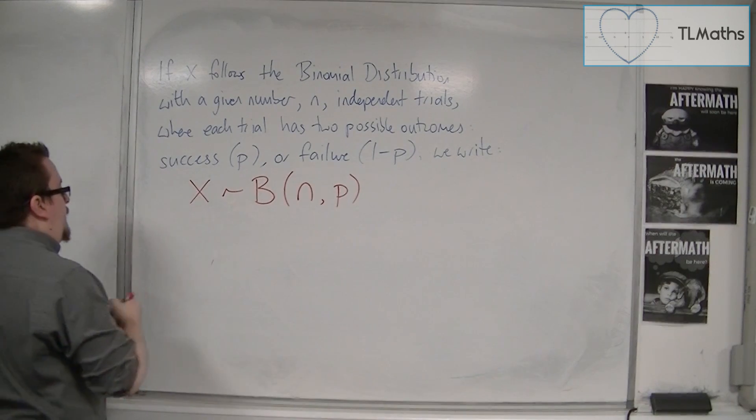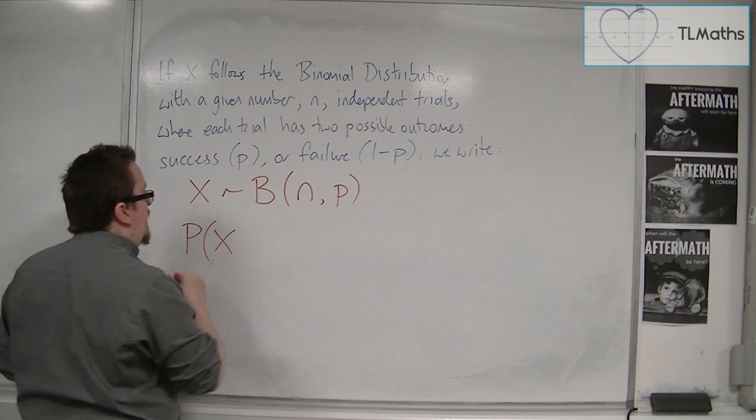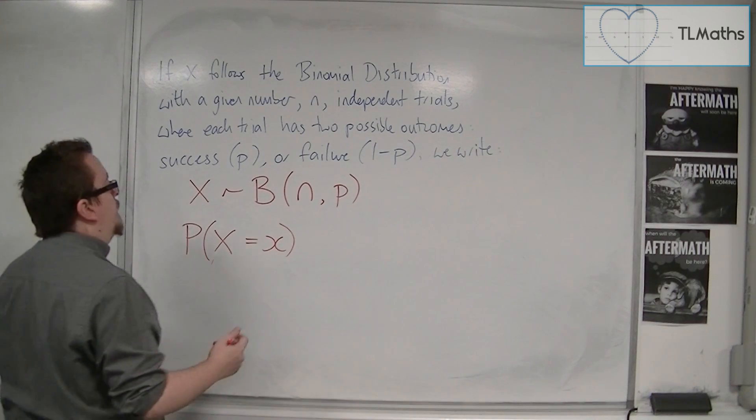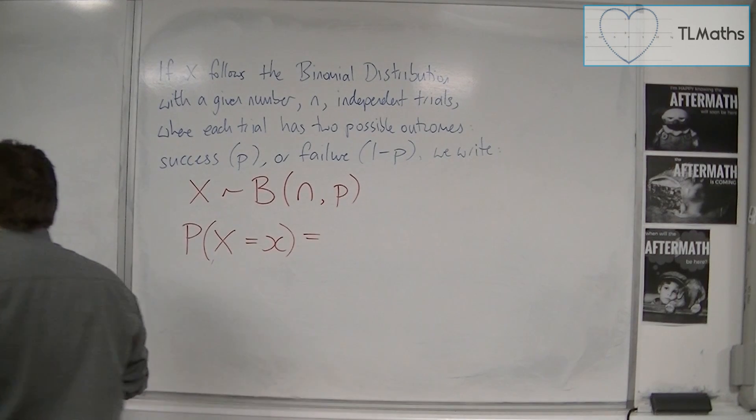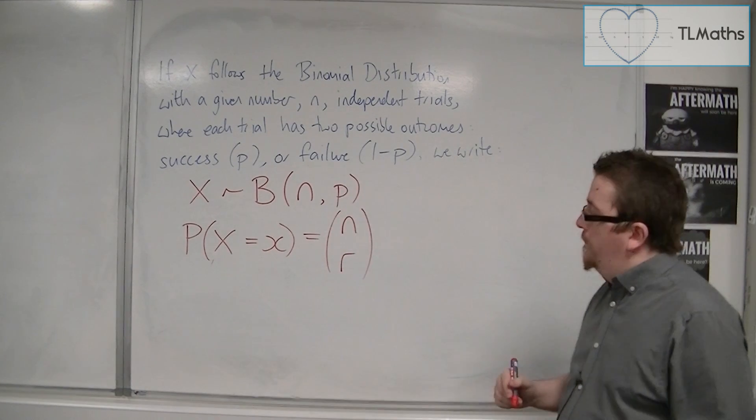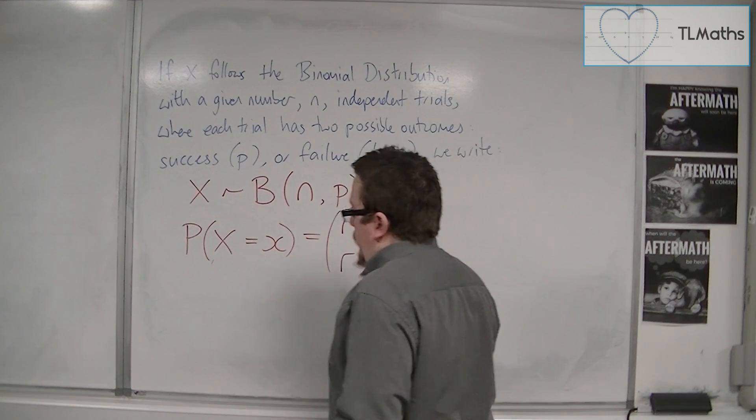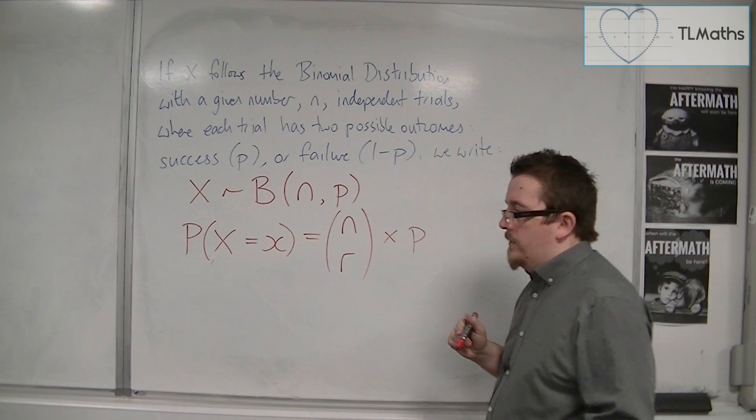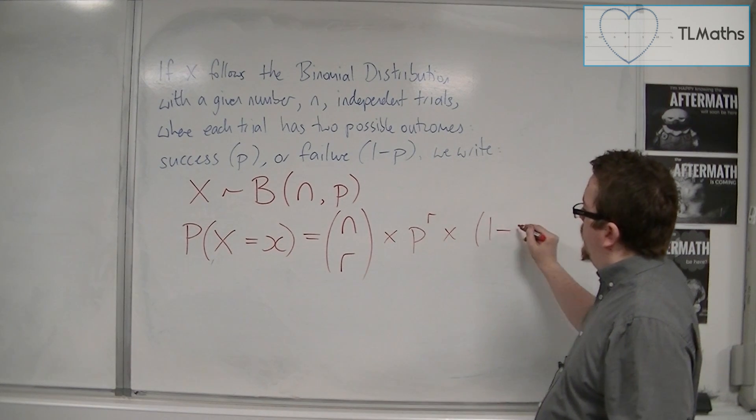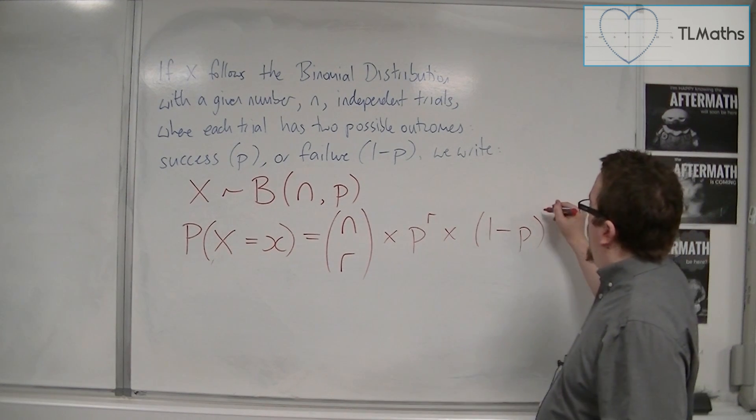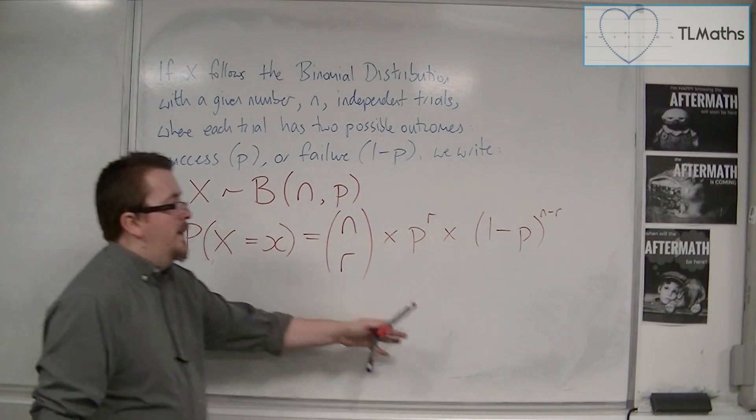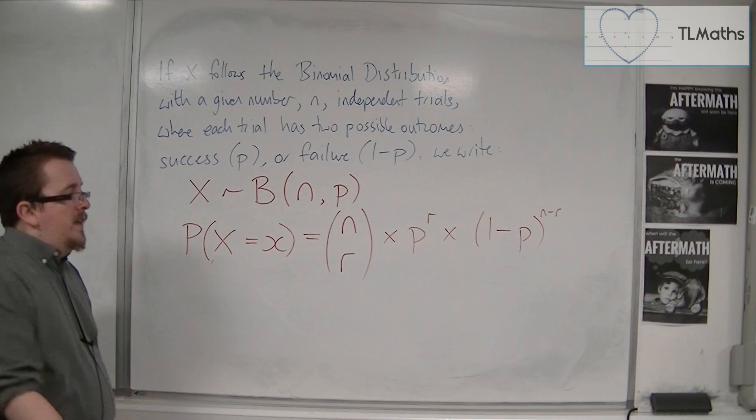Individual probabilities, so the probability of X being equal to a particular value of r, is n choose r, so nCr, times the probability of success to the power of r, times the probability of failure, so 1 minus p, to the power of n minus r. So this is the formula that I've been working with and building up over the last two videos.